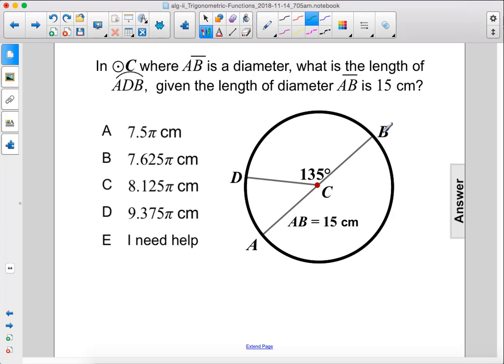In circle C, where AB is a diameter, what is the length of ADB, given the length of diameter AB is 15 centimeters?